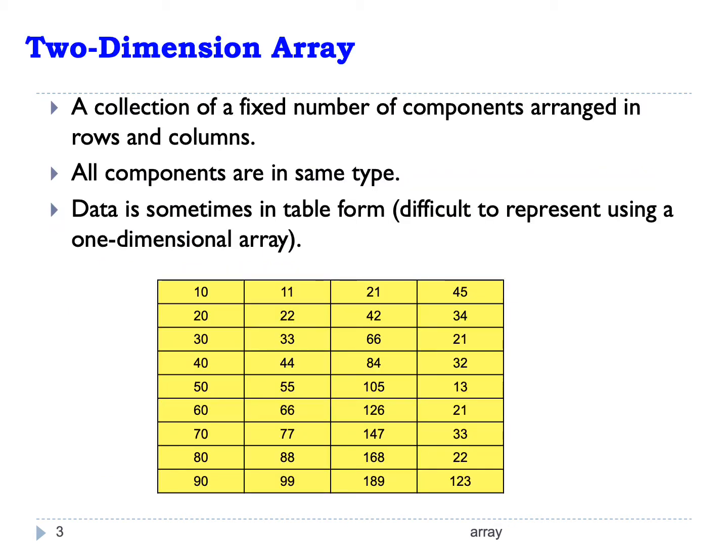In this part, let's look at two-dimensional arrays. In a two-dimensional array, the components are arranged in rows and columns. Similar to the one-dimensional array, they need to be of the same type. We can represent a two-dimensional array in a table form with several rows and columns.